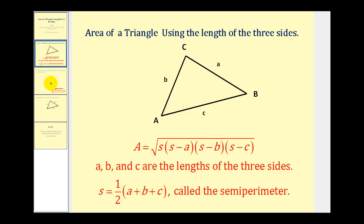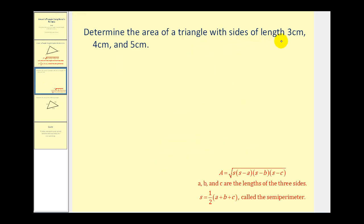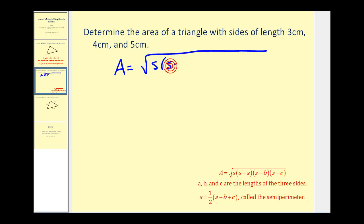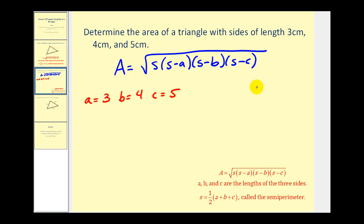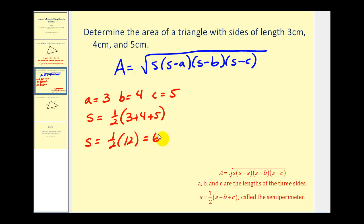Let's take a look at our first example. We want to determine the area of a triangle with sides of length three centimeters, four centimeters, and five centimeters. The area equals the square root of s times (s minus a) times (s minus b) times (s minus c). Let a equal three, b equal four, and c equal five. Remember, s is the semi-perimeter or half of the perimeter. So s equals one-half times (three plus four plus five), which is one-half times twelve, so s equals six.